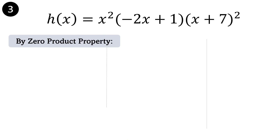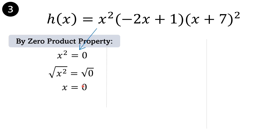H of x equals x squared times the quantity negative 2x plus 1 times the quantity x plus 7 squared. Applying the zero product property, starting with x squared: x squared equals 0. To reduce x squared, let's get the square root of both sides of the equation. We have the square root of x squared equals square root of 0. Therefore x is 0.